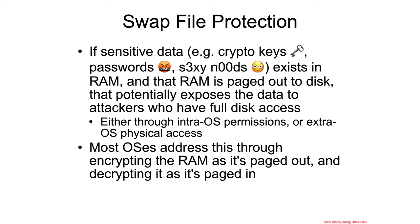Just two other quick miscellaneous points while we're tailing off on page faulting. You can, of course, have sensitive information in your RAM — things such as crypto keys, passwords, and sexy nudes. And so if that's in RAM and then the operating system page fault handler decides to page that information out to disk, that could potentially mean that an attacker who has disk access, whether because of physical or logical access, could ultimately get access to this sensitive information.